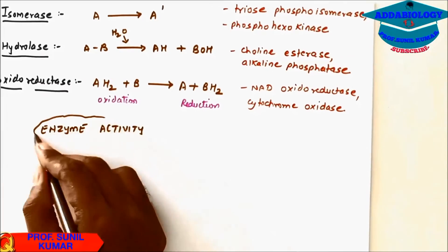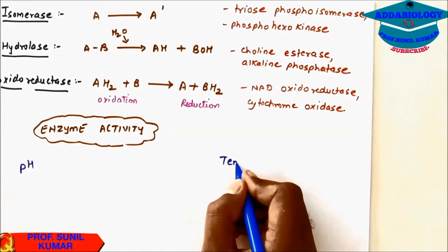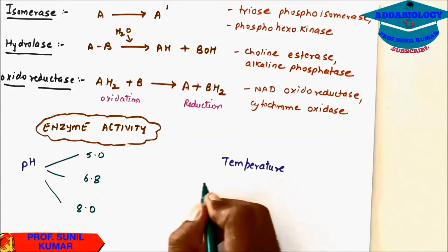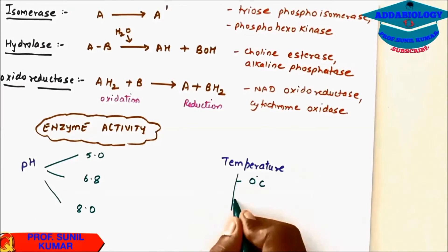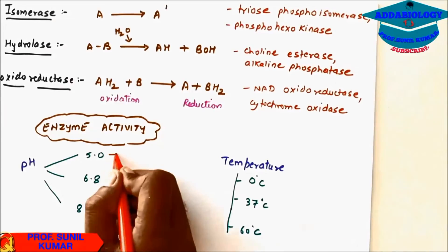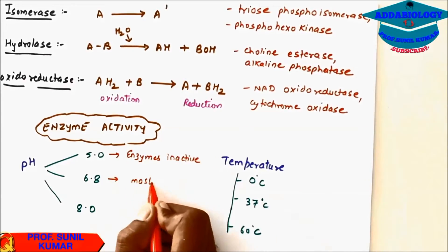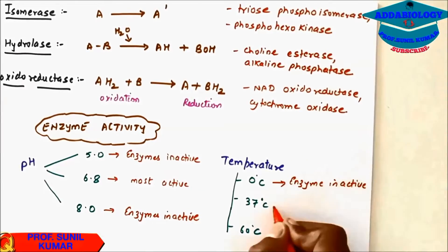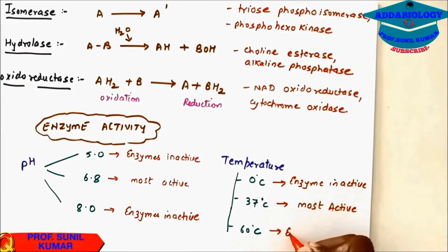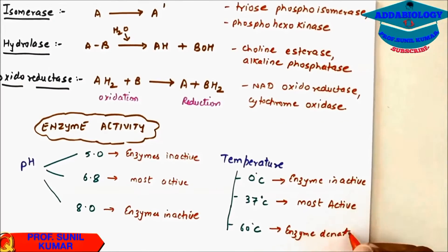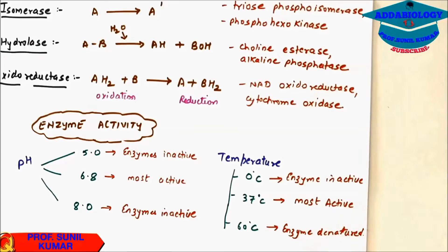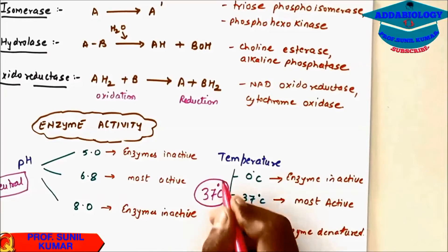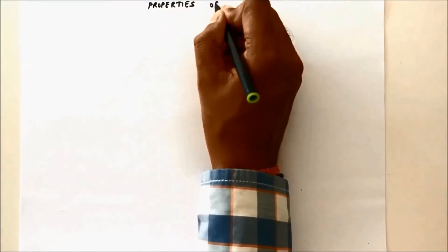Most important is enzyme activity. All enzymes work at a specific pH and temperature. At pH 5.0 the enzyme is inactive; at pH 6.8 it is most active; at pH 8 it is again inactive. With respect to temperature: 0°C is inactive, 37°C is most active, and at 60°C the enzyme gets denatured due to high temperature. The pH of maximum activity is neutral pH, and optimal temperature is 37°C.